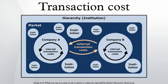In game theory, this is analyzed for instance in the game of chicken. On asset markets and in market microstructure, the transaction cost is some function of the distance between the bid and ask. Policing and enforcement costs are the costs of making sure the other party sticks to the terms of the contract, and taking appropriate action if this turns out not to be the case.